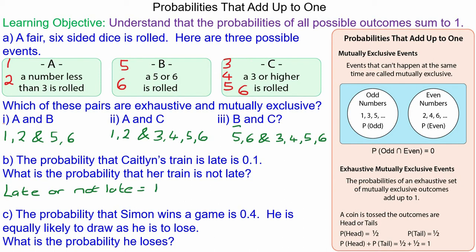So the probability of Caitlin not being late would be 1 take away the probability that she is late, which is 0.9. So this is using probabilities that add up to 1 to calculate the event not happening.